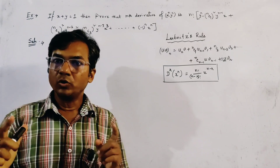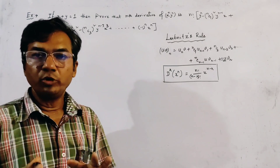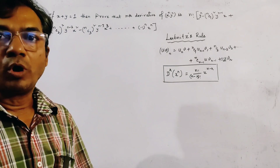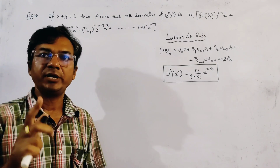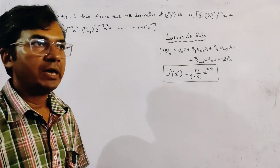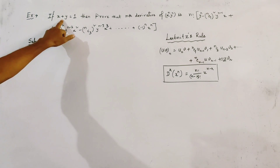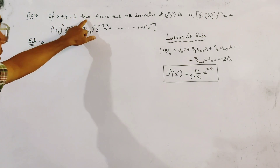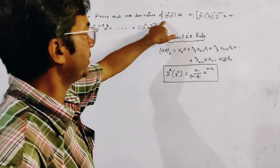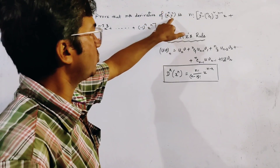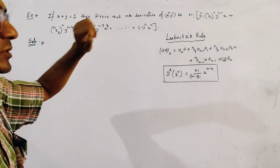In this lecture, we are going to solve an important problem of successive differentiation or repeated differentiation. The problem is: if x plus y equals 1, then prove that the nth derivative of x to the power n times y to the power n is given by a specific result.